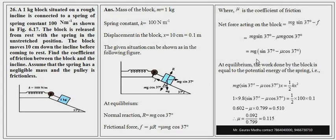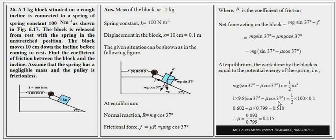Work done by block = force × displacement = F·x, और spring PE = ½kx²। x cancel होने के बाद सभी values put करते हैं: sin37° = 0.6, cos37° = 0.8। इन values को equation में रखने पर μ = 0.115। This is our answer. Thank you very much.